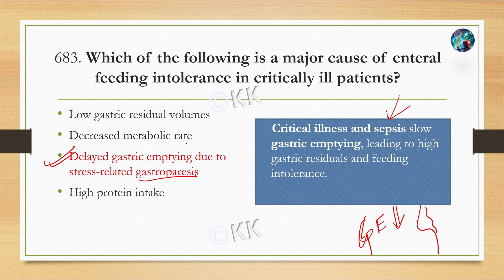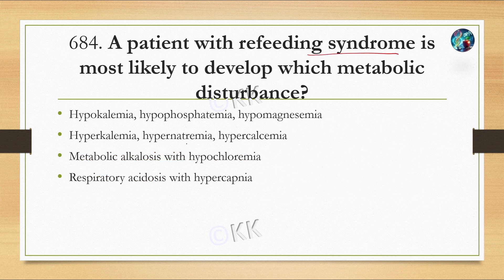Next question: a person with refeeding syndrome is most likely to develop which metabolic disturbance? Option A: hypokalemia, hypophosphatemia, hypomagnesemia. Option B: hyperkalemia, hypernatremia, hypercalcemia. Option C: metabolic alkalosis with hypokalemia. Option D: respiratory acidosis with hypercapnia.